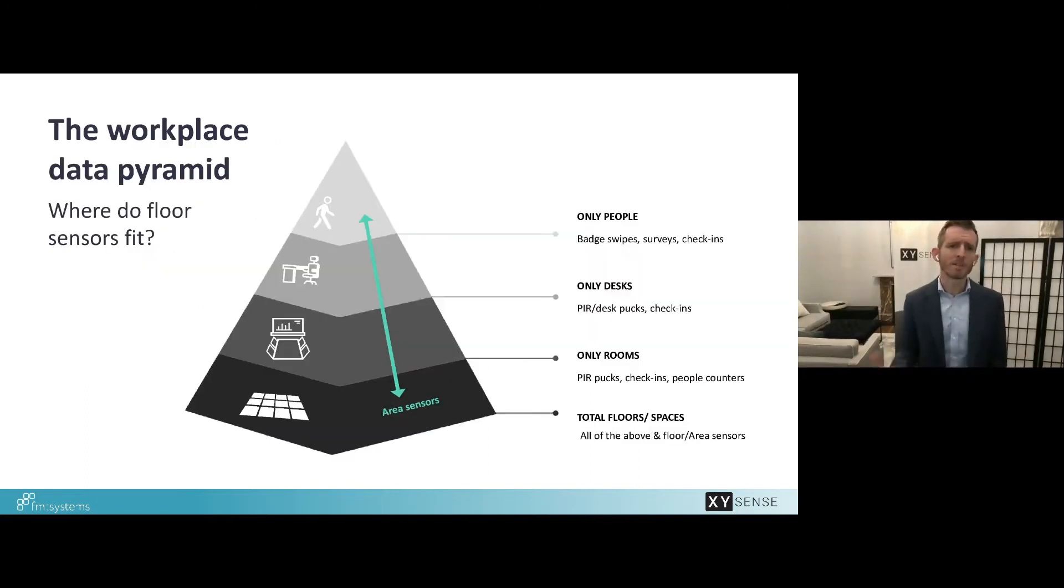As we've already seen there are many different types of sensors to measure space usage. This pyramid shows how different sensors fit in. Often a common first step is actually to use badge swipe data or observation studies. Badge swipe data is usually only available for badging in and not badging out. And it doesn't tell you which individual spaces in the building are being used. Observation studies or bed checks where people walk around with a clipboard typically are short term only and don't give you a bigger picture.